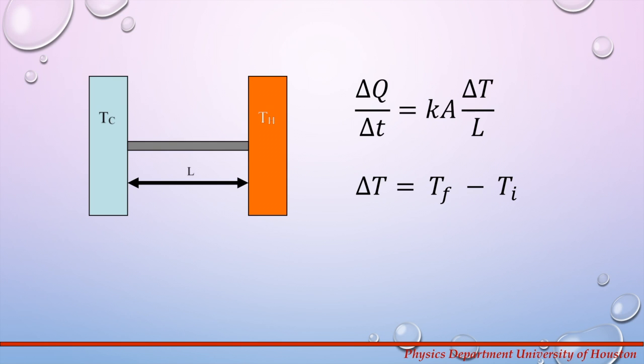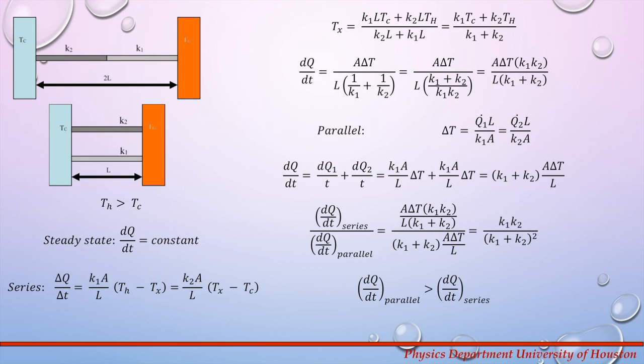In this experiment we will calculate the rate of heat flow for different conducting materials. Now let's take a look what would happen if we have two rods with thermal conductivities K1 and K2 that are used to transfer heat between the two regions with temperatures TH and TC as shown here on the figure. TH is larger than TC.